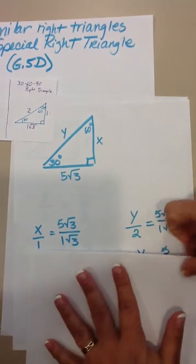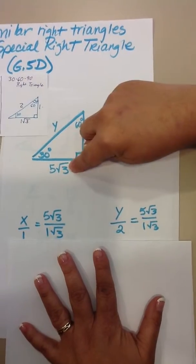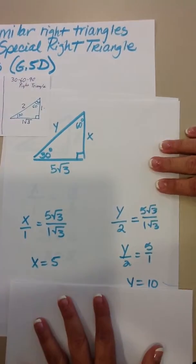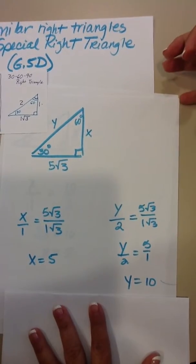When you're solving for y, you're going to do the same thing. y goes to 2 as 5 square root of 3 goes to 1 square root of 3. And then they can see that it cancels, but in this case, they still have to cross-multiply.